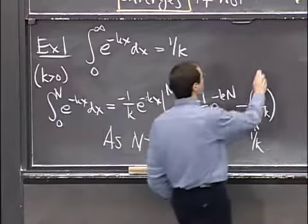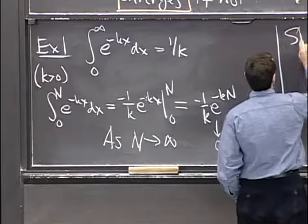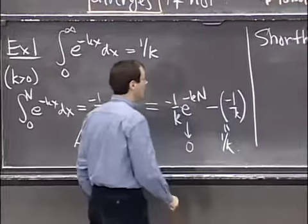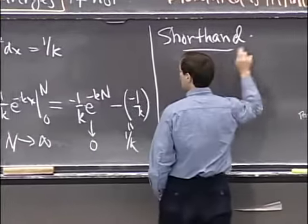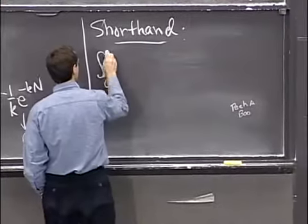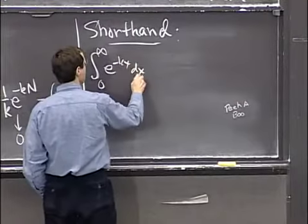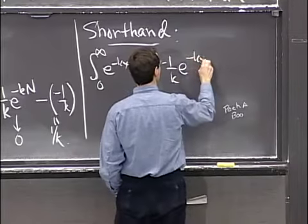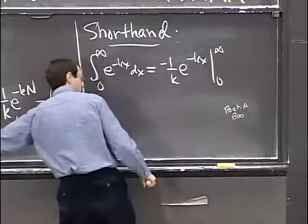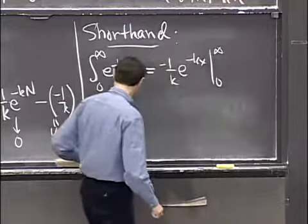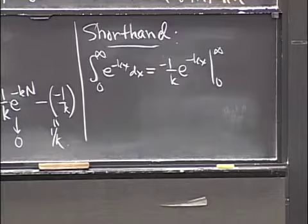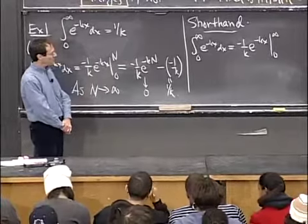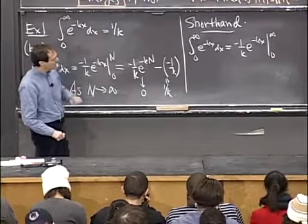So let me show you a shorthand for this same calculation. Namely, I write 0 to infinity e to the minus kx dx. And that's equal to minus 1 over k e to the minus kx 0 to infinity. All right, so here we are.